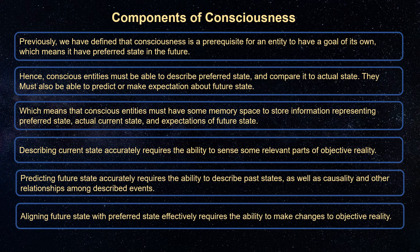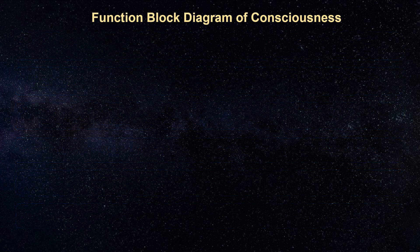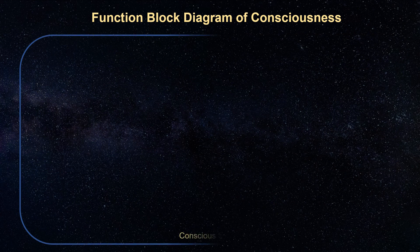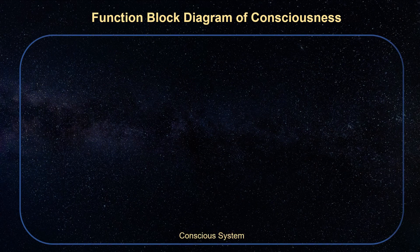Aligning future state with preferred state effectively requires the ability to make changes to objective reality. Based on those requirements, a function block diagram for consciousness can be constructed, which can be done using only some basic knowledge of computation.